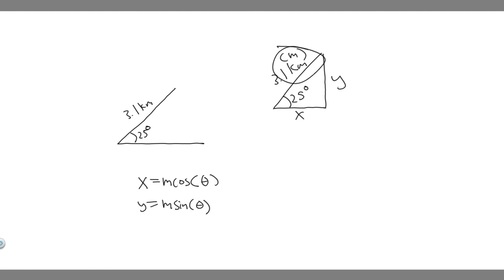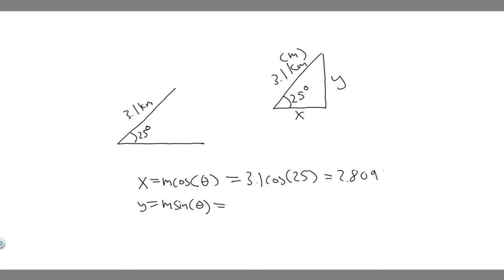For x, which is how far east they're going to walk, it's just m — which is 3.1 — multiplied by the cosine of our angle, which is 25 degrees. So 3.1 times cosine of 25. You're going to get 2.80955. I'm just going to round to 2.81 kilometers — keep in mind it's in kilometers because that's the unit of our magnitude. So 2.81 kilometers.